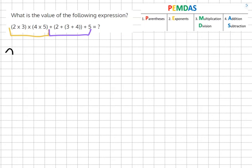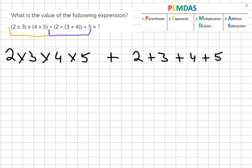So the equation becomes 2 times 3 times 4 times 5 plus 2 plus 3 plus 4 plus 5 equals.